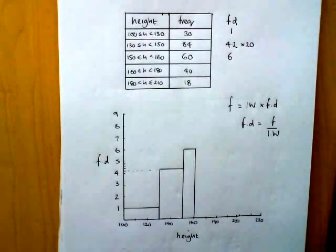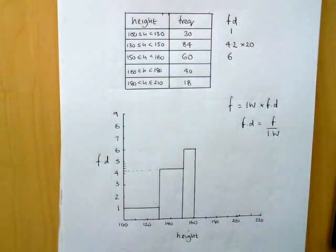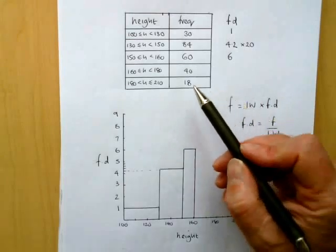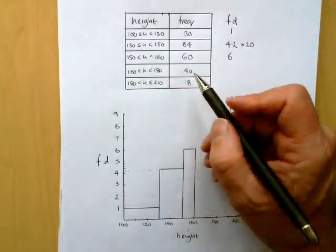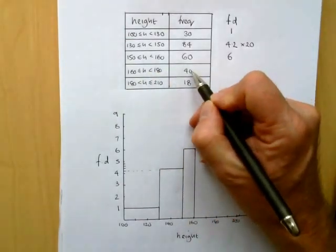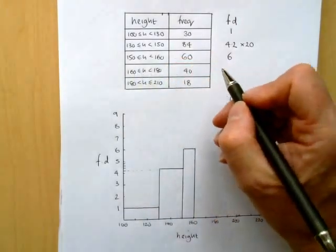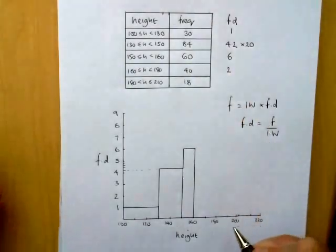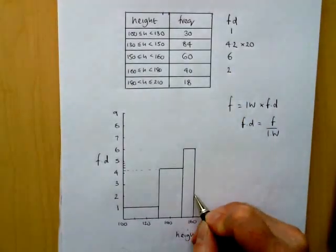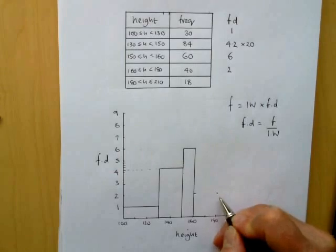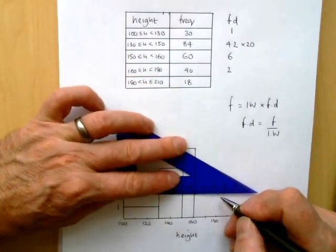Now to compute the rest of the table, if I look at the 160 to 180, I've got the frequency. So I'll do my frequency of 40 divided by my width of 20, which gives me 2. So my 160 to 180 equals 2. I'll just do that. That's that part done.